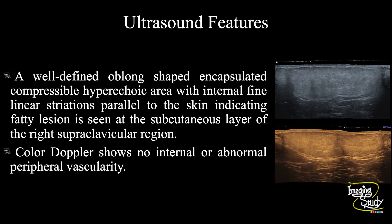In summary, a well-defined oblong-shaped encapsulated compressible hyperechoic area with internal fine linear striations parallel to the skin, indicating a fatty lesion, is seen at the subcutaneous layer of the right supraclavicular region. Color Doppler shows no internal or abnormal peripheral vascularity. These features conclude this as a case of superficial supraclavicular lipoma.